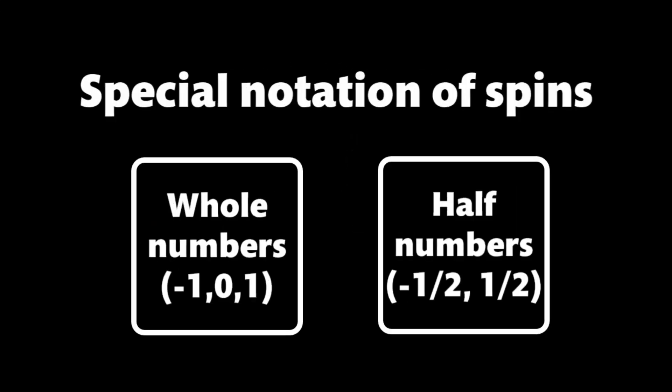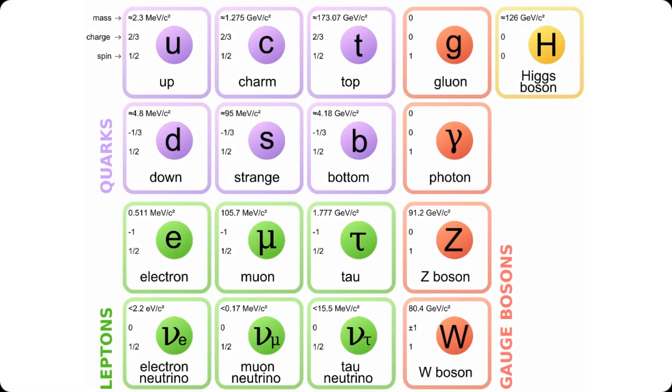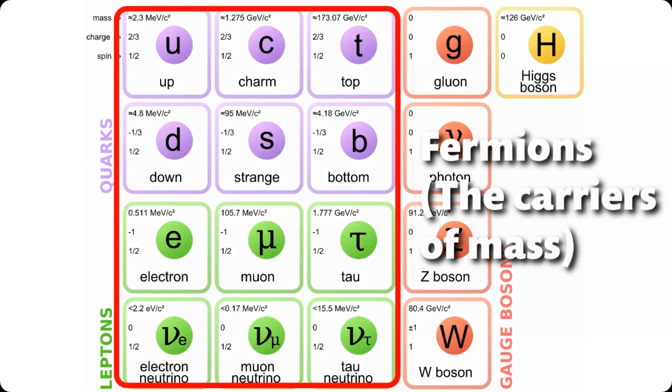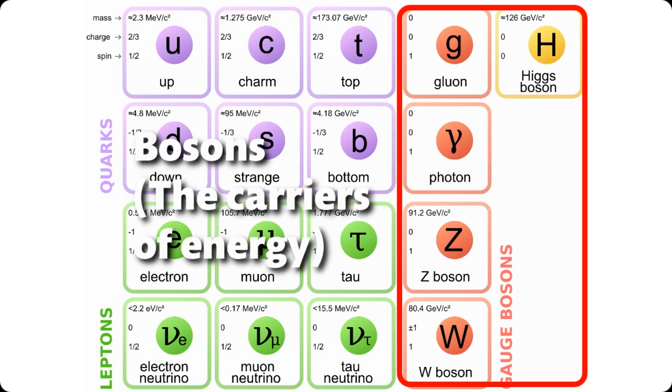There is also a special notation for spins that consist of whole numbers and half numbers. These correspond to the two major types of elementary particles: fermions, the carriers of mass, and bosons, the carriers of energy.